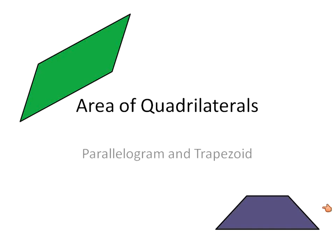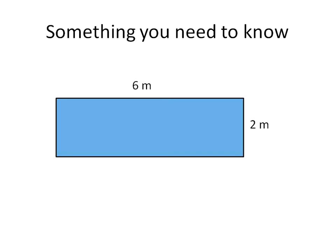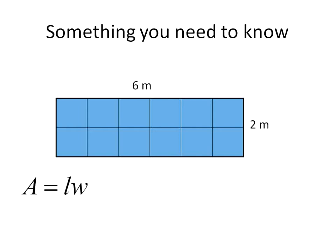Before we get started with that, we need to understand something about what area is, and this one equation that's pretty common and we'll see it used later on. This is a rectangle with the length of 6 and the width of 2. The area is represented usually by drawing little squares all over it. If you count each square unit, there are 12. Or you can use the equation that the area is equal to the length times the width — in this case 6 times 2 — which is equal to 12 square meters. So that's the equation for finding the area of a rectangle, and that's what area is.